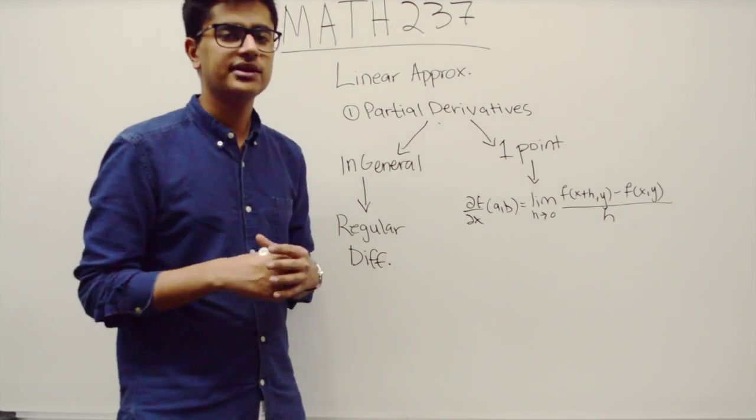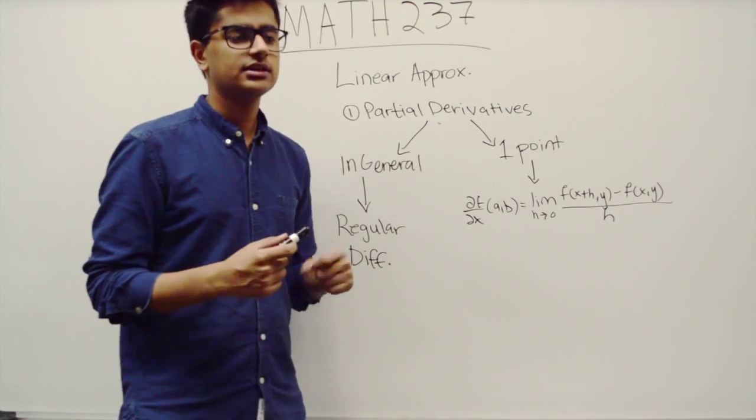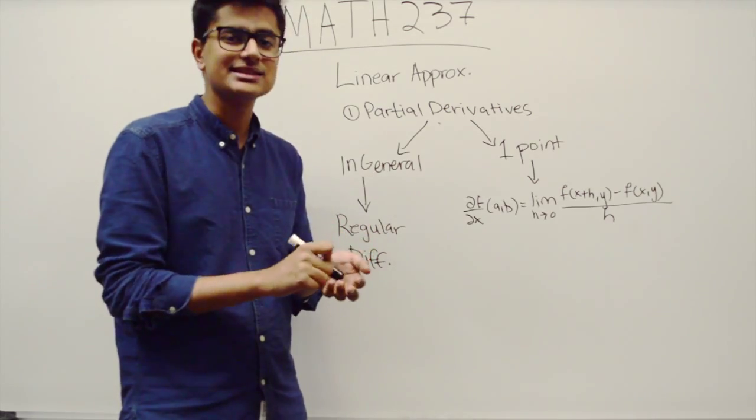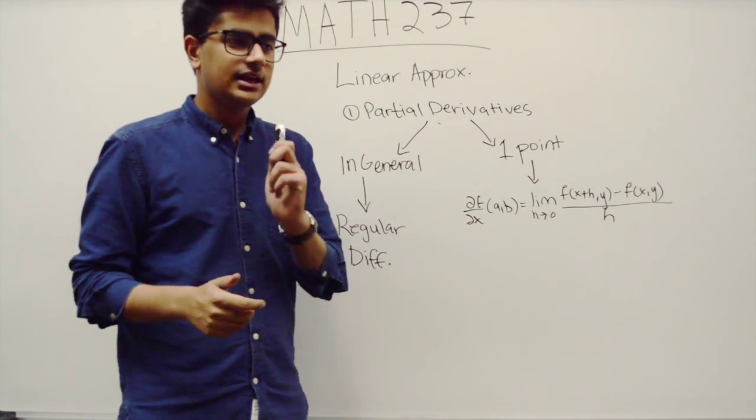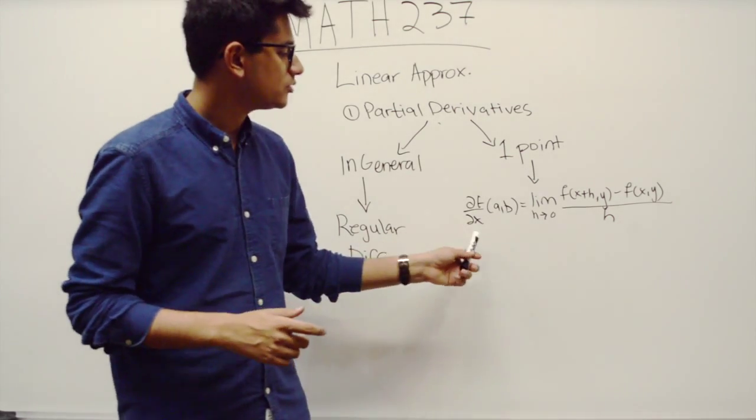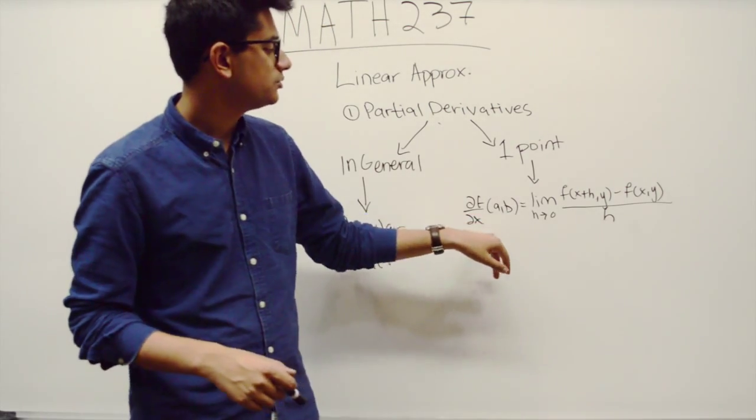On the other hand, if you're asked to find the partial derivative at a specific point, like (0,0), in most cases you'll be using the definition of the partial derivative, which basically says you use this limit.